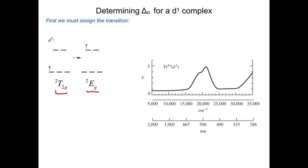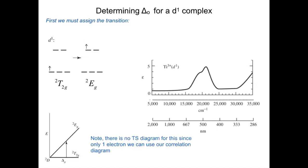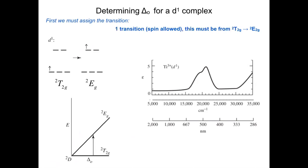We have to remember that the transition in a D1 complex is simply doublet T2G going to doublet EG. Here it is shown based on the electronic configuration. We're exciting this electron in the T2G set to an electron in the EG set. The correlation diagram would look like this where the doublet D term splits into doublet T2G going up to doublet EG, and delta octahedral is the gap here.